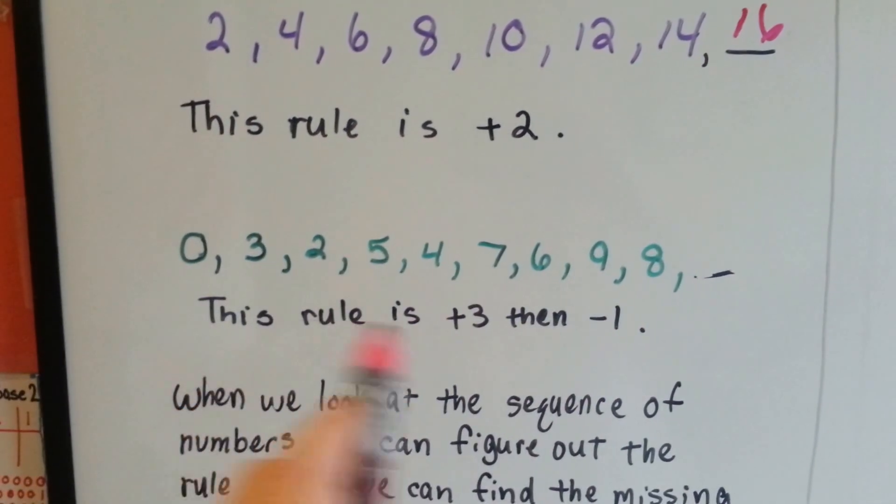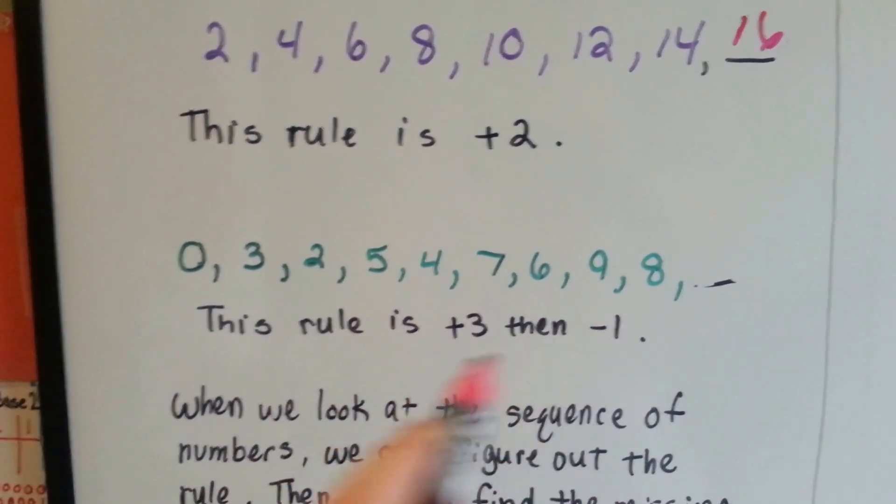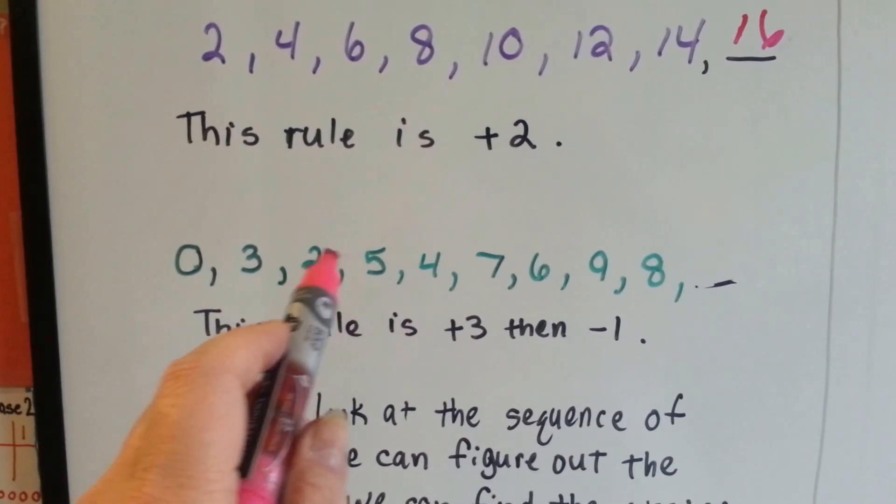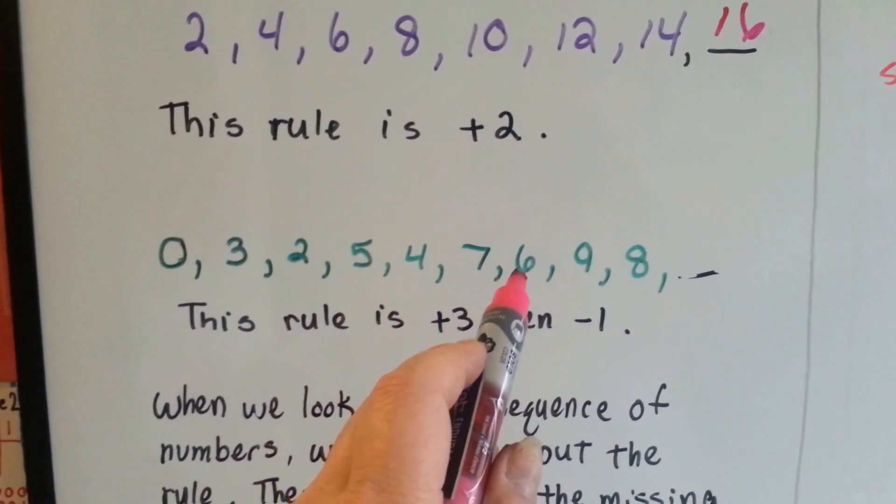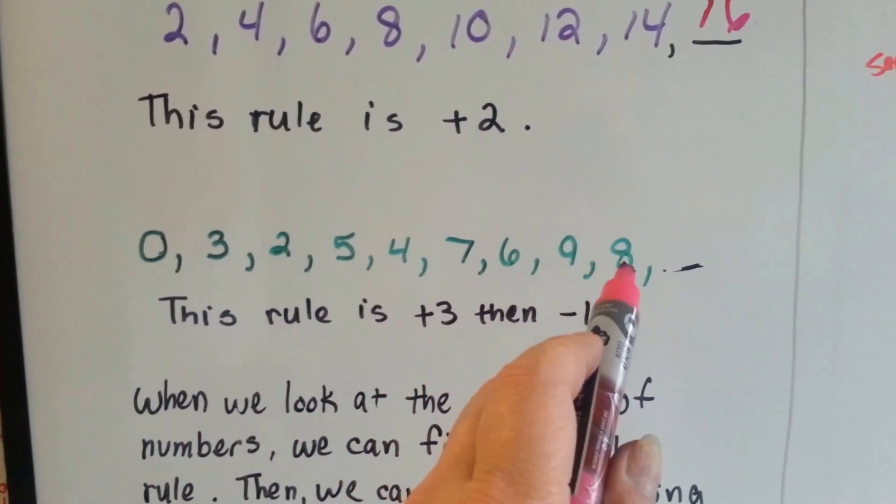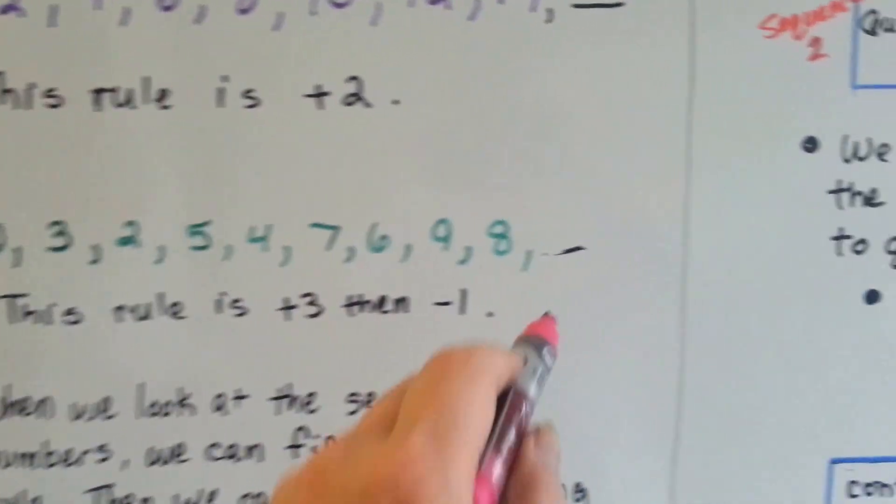This one is plus 3, then minus 1. 3, and then take away 1 is 2, plus 3 is 5, take away 1 is 4, plus 3 is 7, take away 1 is 6, plus 3 is 9, take away 1 is 8, plus 3 would be 11.